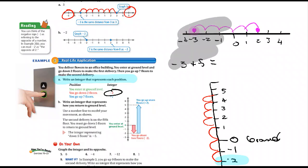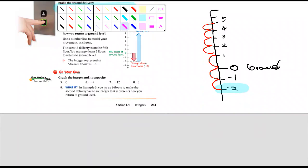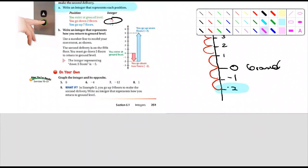So, let's see here. Let's move down a little bit. Okay, on your own, it says for 5, 6, 7, and 8, it says graph the integer and its opposite. Well, instead of doing that, let me just ask you guys some questions.